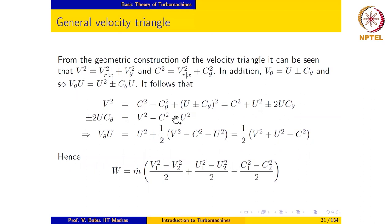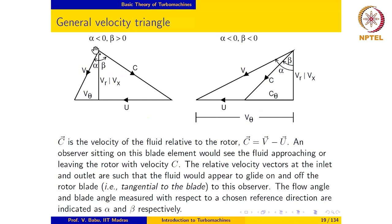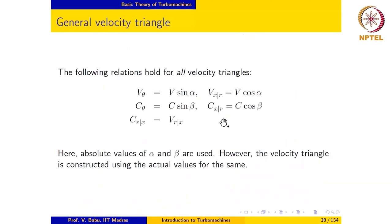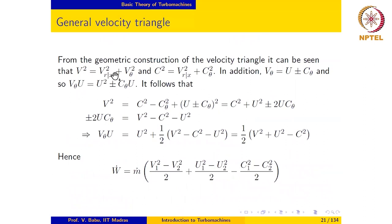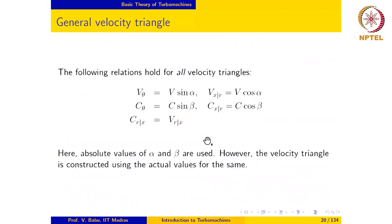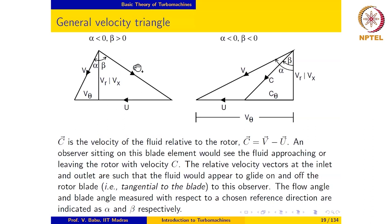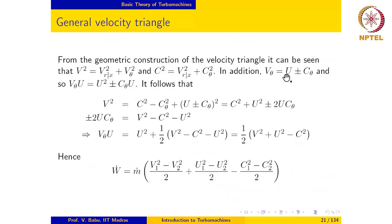From the geometric construction of the velocity triangle, Pythagoras theorem applies, giving V² equals V_x² plus V_theta², and similarly C² equals C_x² plus C_theta². We have already used the fact that C_r,x equals V_r,x. We also notice that V_theta equals U minus C_theta in one case, and V_theta equals U plus C_theta in the other. So we may write V_theta equal to U plus or minus C_theta.